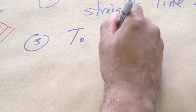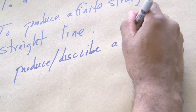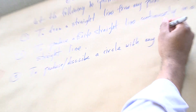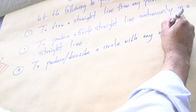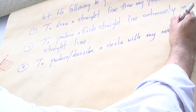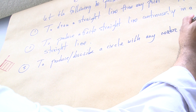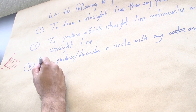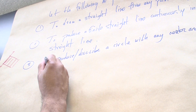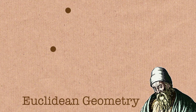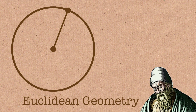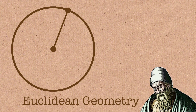To produce a circle with any center — that's a point — and any distance or radius. We've gone from points and lines and planes to now allowing some other objects to live in our world: circles.